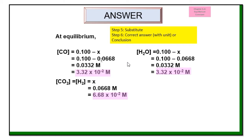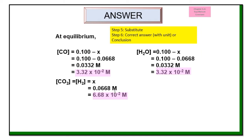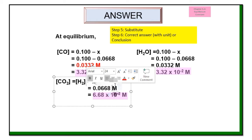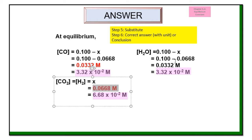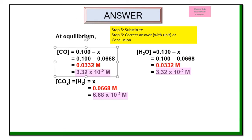After choosing x equals 0.0668, substitute to find the concentration of CO, H2O, CO2, and H2 at equilibrium. Since CO2 and H2 are both equal to x, you can write the answer once: 0.0668 molar. CO and H2O are 0.1 minus x, giving 0.0332 molar. The most important thing — don't forget the unit.